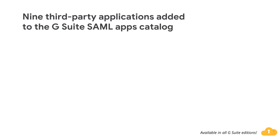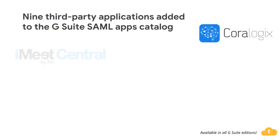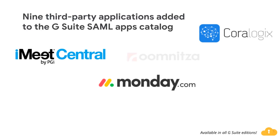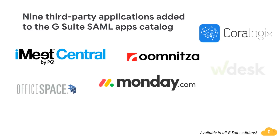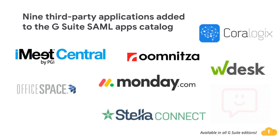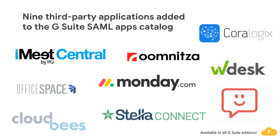With single sign-on, or SSO, users can access all of their enterprise cloud applications after signing in just one time. With more than 800 applications with pre-integrated SSO support in our third-party apps catalog already, we're adding applications including Office Space, Monday, and CloudBees, just to name a few. You can find our full list of pre-integrated applications, as well as instructions for installing them, in the Help Center.